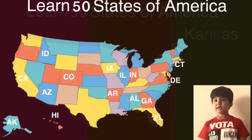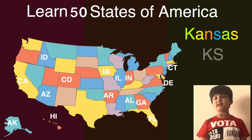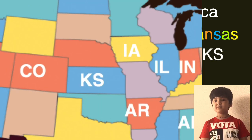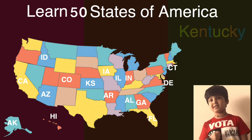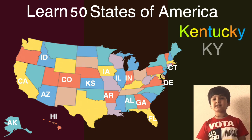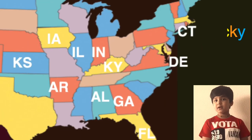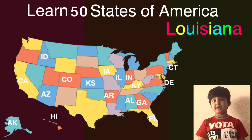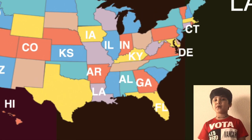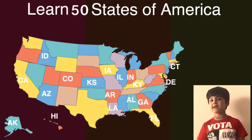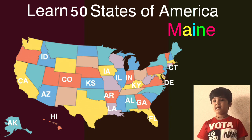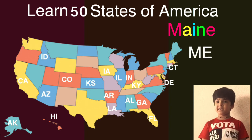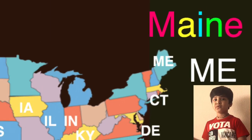The next one is Kansas and the short one is KS. Here comes Kansas on the map. The next one is Kentucky and the short one is KY. Here comes Kentucky on the map, can you guess what will come next? The next one is Louisiana and the short one is LA. Here comes Louisiana on the map, can you guess what will come next? The next one is Maine and the short one is ME. Here comes Maine on the map, can you guess what will come next?